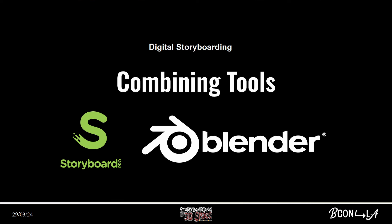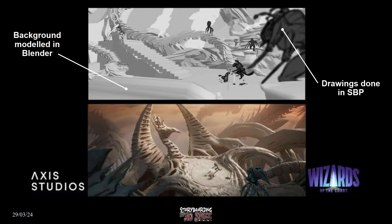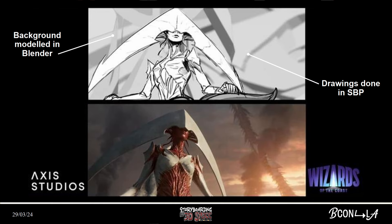Usually what we find is that to get storyboards into some sort of 3D environment, we combine tools like Storyboard Pro and Blender. What usually happens is that a scene might be made inside of Blender and then a playblast or plate would be rendered out, used as a background, and then drawn over in Storyboard Pro, such as you see here. This is Paul's work for Axis Studios. That background is Blender and the foregrounds are illustrated in Storyboard Pro.